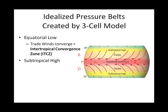Then, where the Hadley cells descend and the Ferrel cells pick up — where that air is descending — we tend to have a belt of high pressure: subtropical high pressures. We tend to have an ongoing high where the Hadley cell descends there.